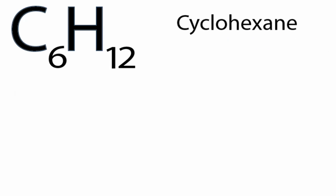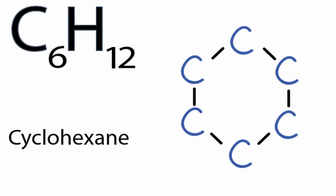So let's put a structure on the screen. It's a ring with six carbons and only single bonds. You can see that each carbon has two bonds connected to it, and each bond is two valence electrons, so each carbon has four valence electrons right now.